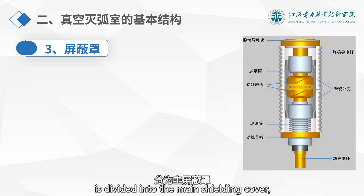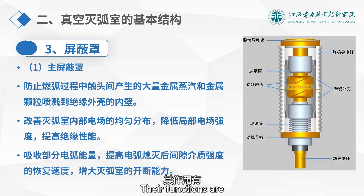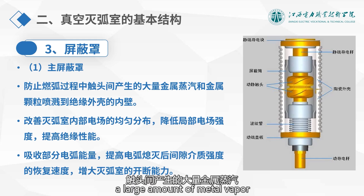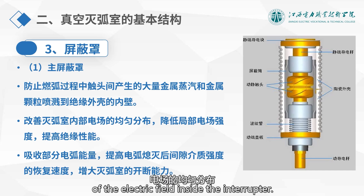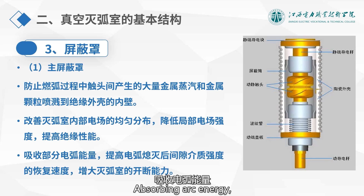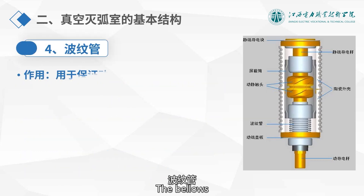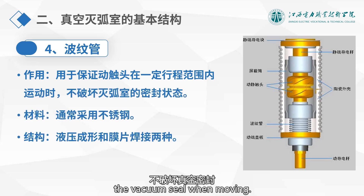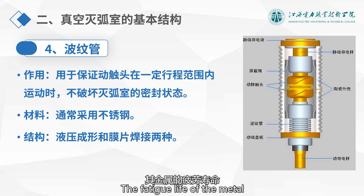The shielding cover is divided into the main shielding cover, the bellows shielding cover, and the equalizing shielding cover. Their functions are: first, preventing a large amount of metal vapor and metal particles generated during arcing from spraying; second, improving the uniform distribution of the electric field inside the interrupter; third, absorbing arc energy, cooling it down, and speeding up the recovery of the dielectric strength of the gap after the arc is extinguished. The bellows ensure that the moving contact does not destroy the vacuum seal when moving, and is the most easily damaged component — its fatigue life determines the mechanical life of the vacuum interrupter.